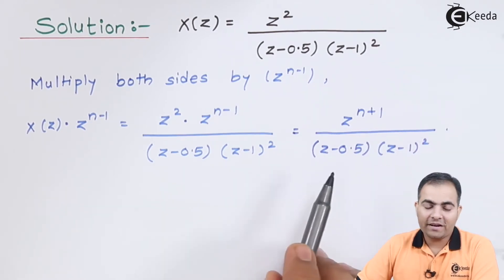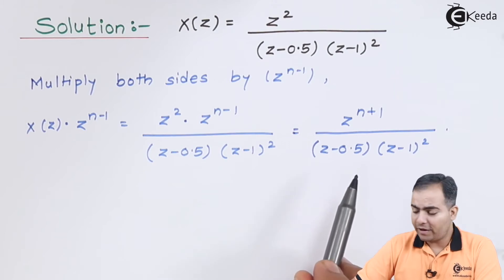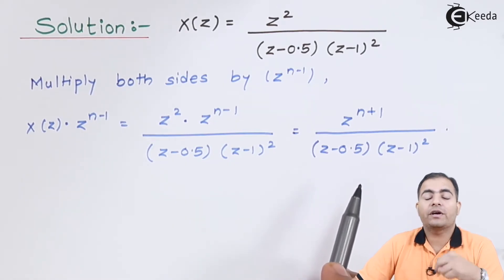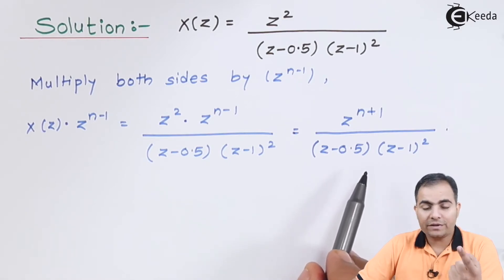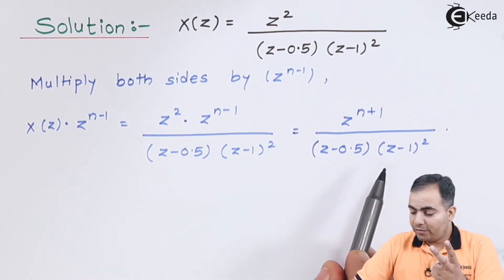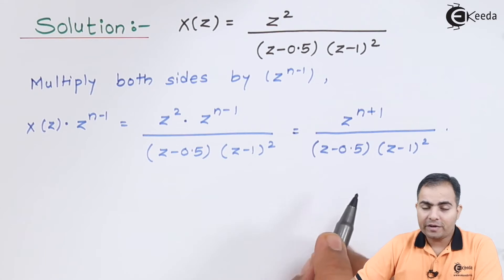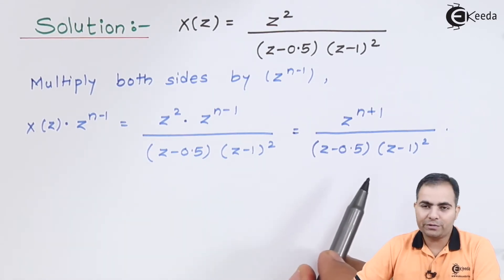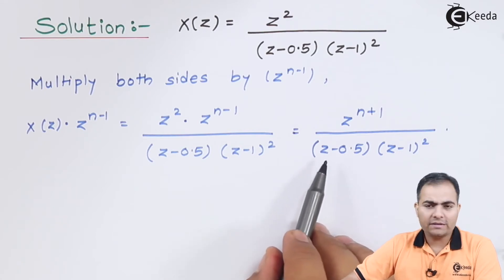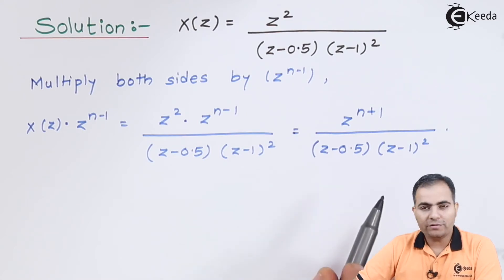This question involves a simple pole, a multiple pole, and a repeated pole. In inverse Z-transform, we can solve repeated pole values in two ways: by partial fractions — either by differentiating 1 over (Z minus 1) squared or by substituting Z equals 0 and Z equals 1. In the residue theorem, we differentiate the function with respect to Z for the double pole. First, we solve the residue at Z equals 0.5, then move on to Z minus 1 the whole square.